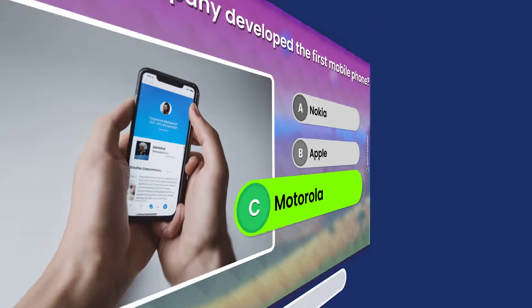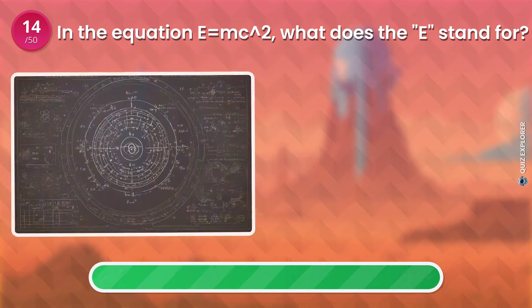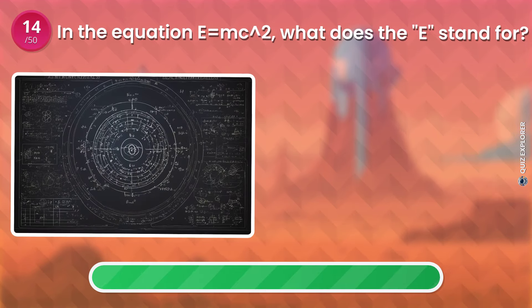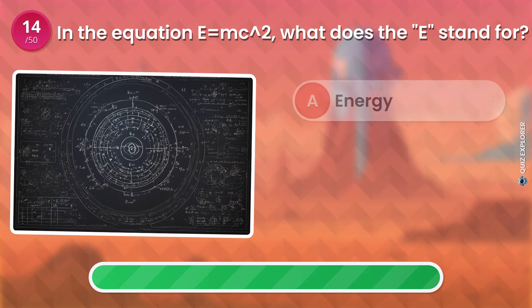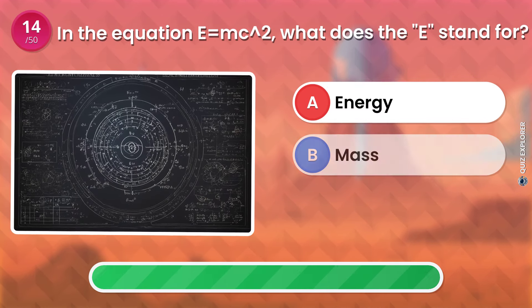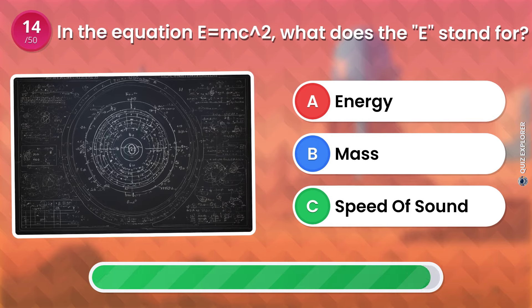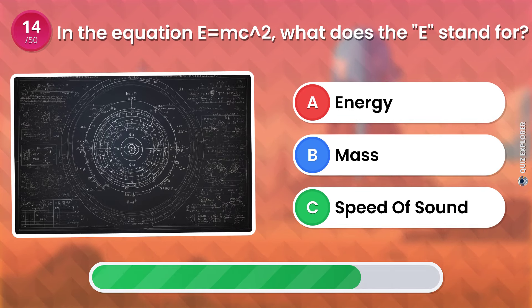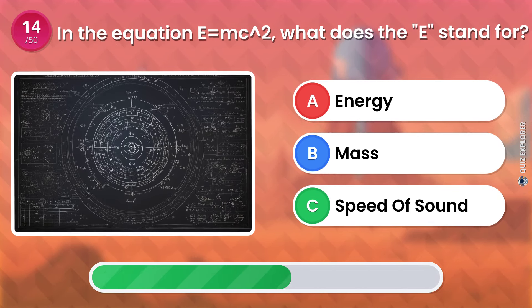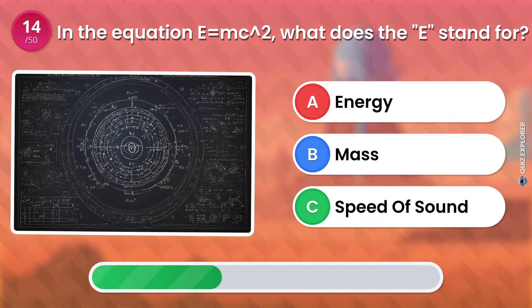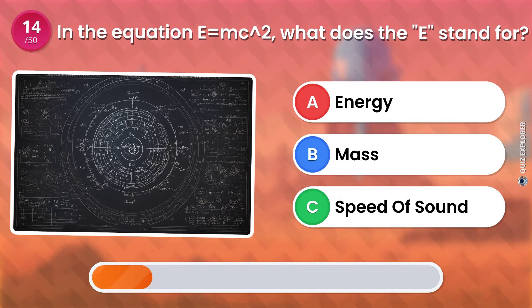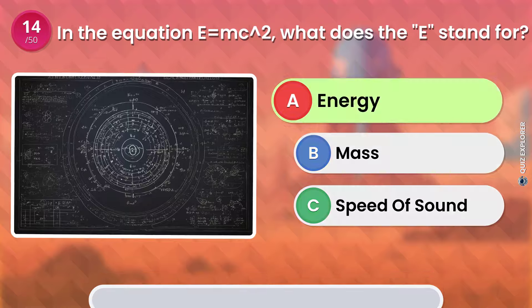In the equation E equals MC squared, what does the E stand for? Energy. Mass. Speed of sound. The answer is: Energy.